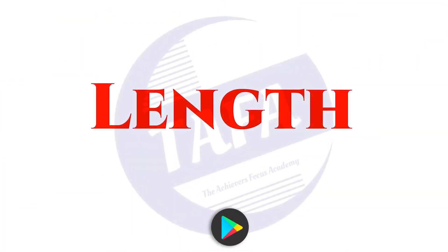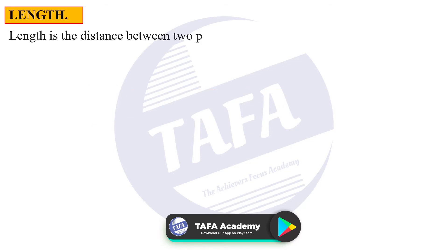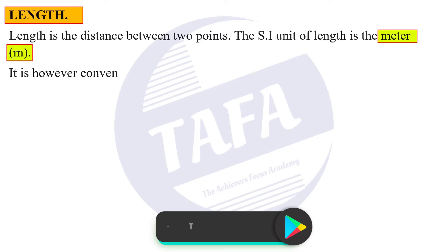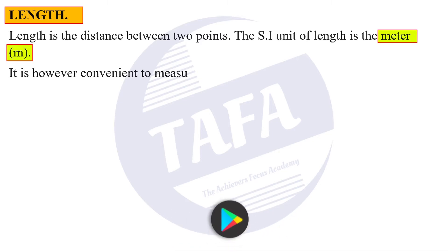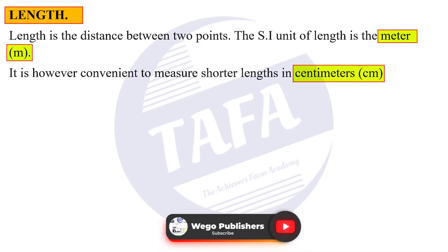Length is the distance between any two points. The SI unit of length is the meter. However, it is convenient to measure shorter lengths in centimeters and longer distances in kilometers.